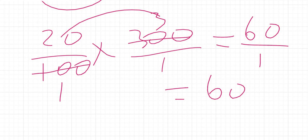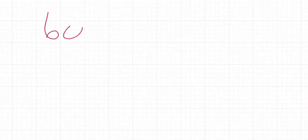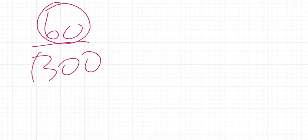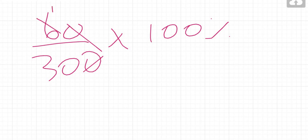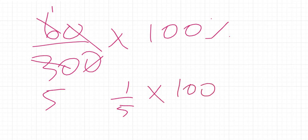If you want to prove this is true — that sixty dollars is twenty percent of three hundred — you write 60 over 300 times 100 percent. Simplifying: 300 divided by 100 is 3, so we have 60 divided by 3 times 1, which is 20. So you actually get twenty percent, confirming our answer is correct.